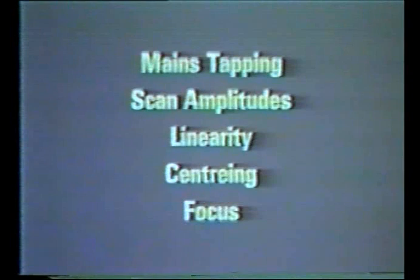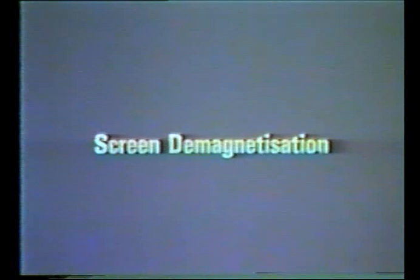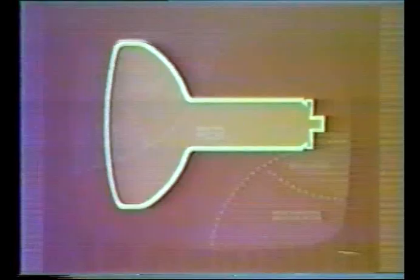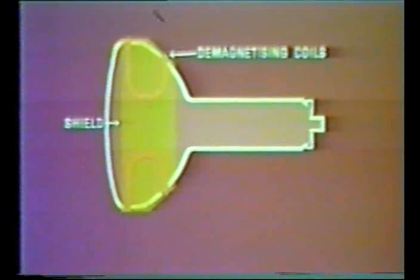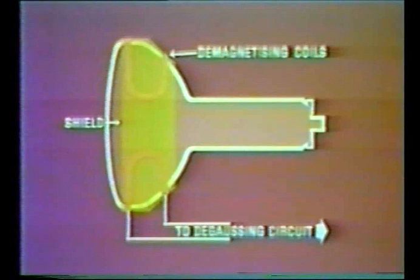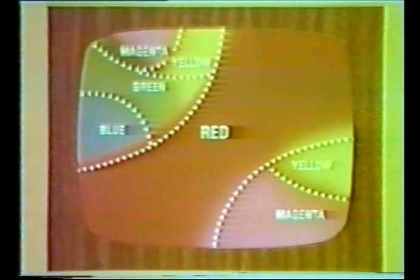A colour picture tube is very sensitive to magnetic effects due either to local or the Earth's magnetic field, and it may easily become permanently magnetised. Adjustments should be made with the receiver in the position in which it is intended to be used. A magnetised tube is incapable of giving a proper colour picture and it is necessary to demagnetise it. This procedure is called degaussing, and it is expected that all colour television sets will be fitted with automatic circuits to degauss the screen every time the receiver is switched on. Workshops should be equipped with their own degaussing coils to deal with rare cases of severe magnetisation.